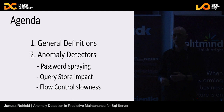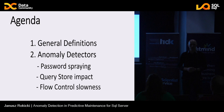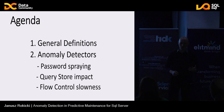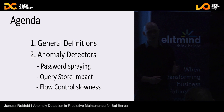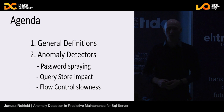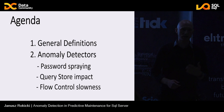The agenda for today: we've already covered good portions of definitions, but I want to be more precise. We'll cover general definitions, then build a few anomaly detectors. First, a password spraying attack — a security edge case I'll explain. Then we'll look at query store impact — what happens when we enable query store. Finally, flow control activity, which suggests client slowness.